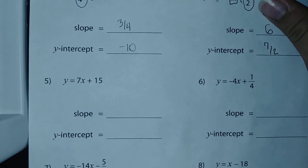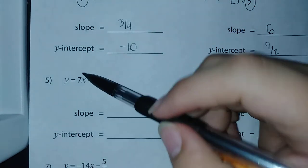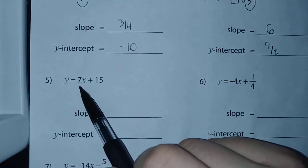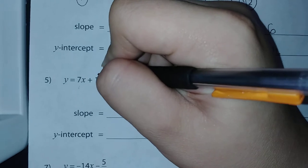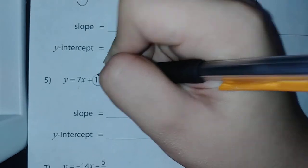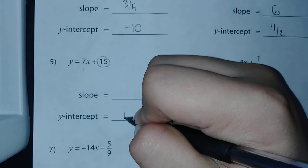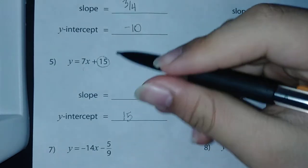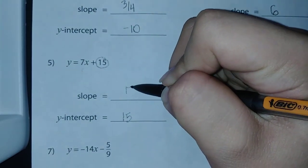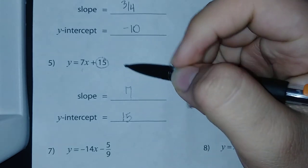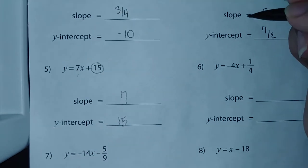Number five: y = 7x + 15. It's positive since it has a plus sign, so our y-intercept is 15. The 7x gives us our slope, which is just 7.